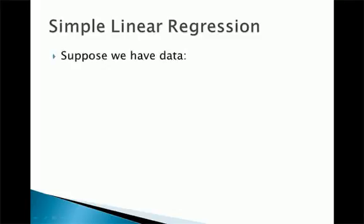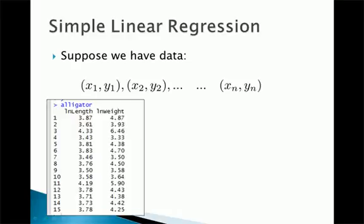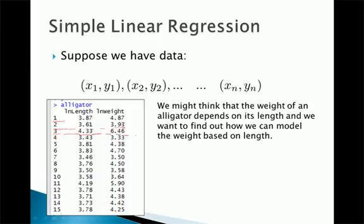Simple linear regression — let's just remind ourselves what that is. Suppose we have data with two variables, x and y, and for each variable we have some kind of value. For example, we have observations about many alligators, and each alligator has length and weight — log of length and log of weight. We're interested in a relationship between these variables, and we might hypothesize that the weight of the alligator depends on its length, and we want to find out how we can model the weight based on length.